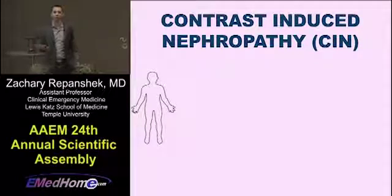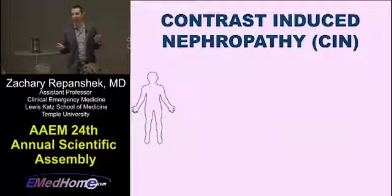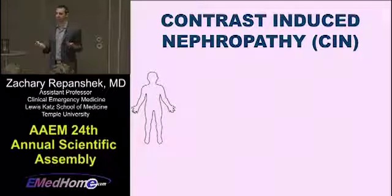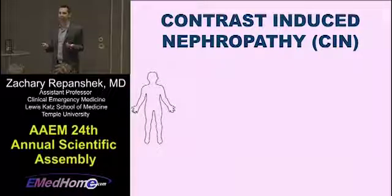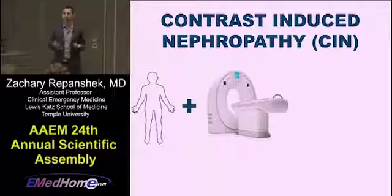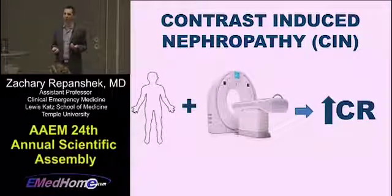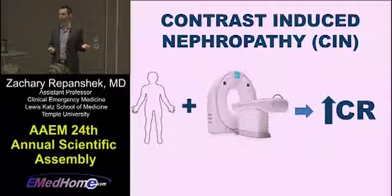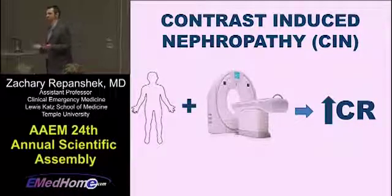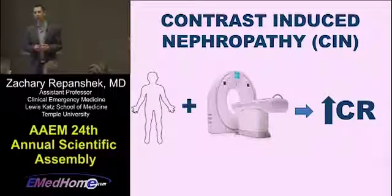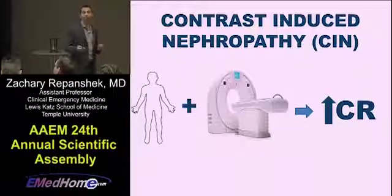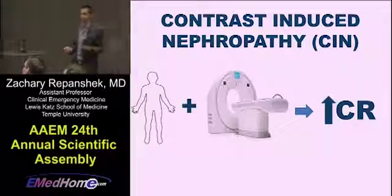Let's talk about what contrast-induced nephropathy is and where this idea comes from. To make things really simple: the idea is that somebody gets IV contrast, and at some later point their creatinine is measured and it's higher than it was before they got the IV contrast. That's the basis for most of the studies on which we base our understanding of CIN. The problem is that doesn't necessarily show causation — it shows a correlation.